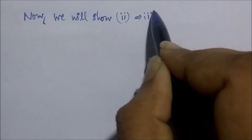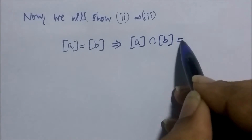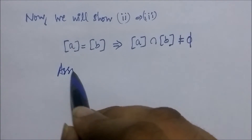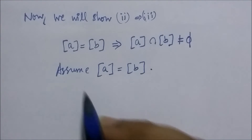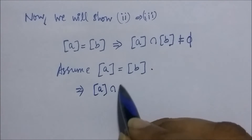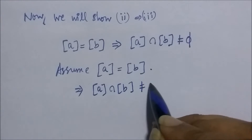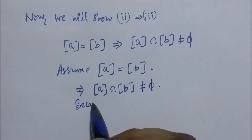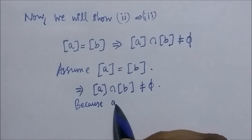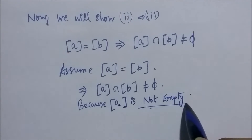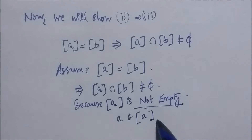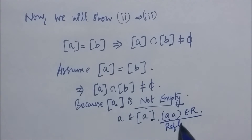Now we show that statement 2 implies statement 3: equivalence class of A equal to equivalence class of B implies their intersection is not empty. Assume equivalence class of A equals equivalence class of B. Their intersection is not empty because the equivalence class of A is not an empty set — A is an element of the equivalence class of A since A, A is in the relation because R is reflexive. Hence the intersection of these two equivalence classes is not empty, so statement 2 implies statement 3.